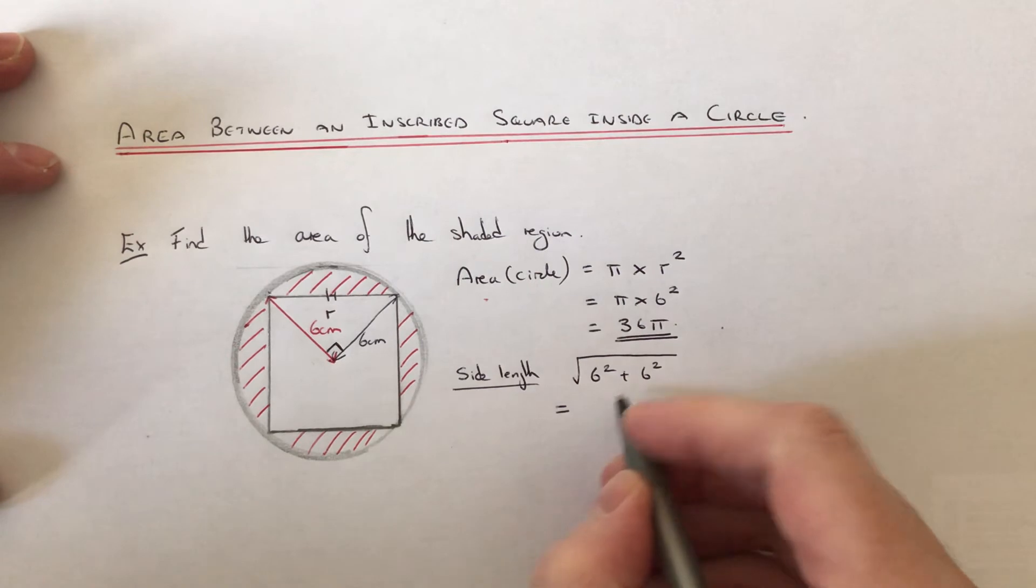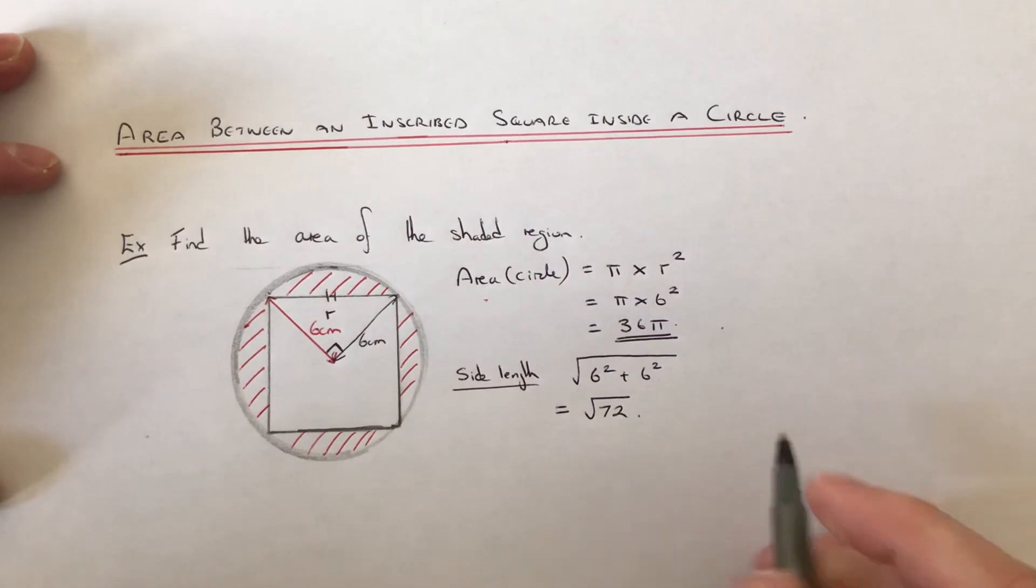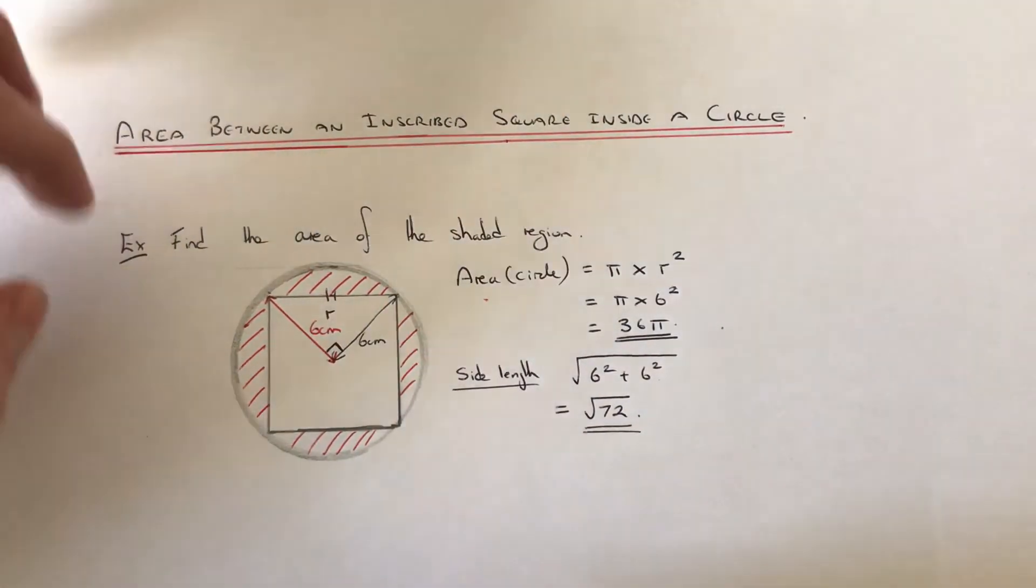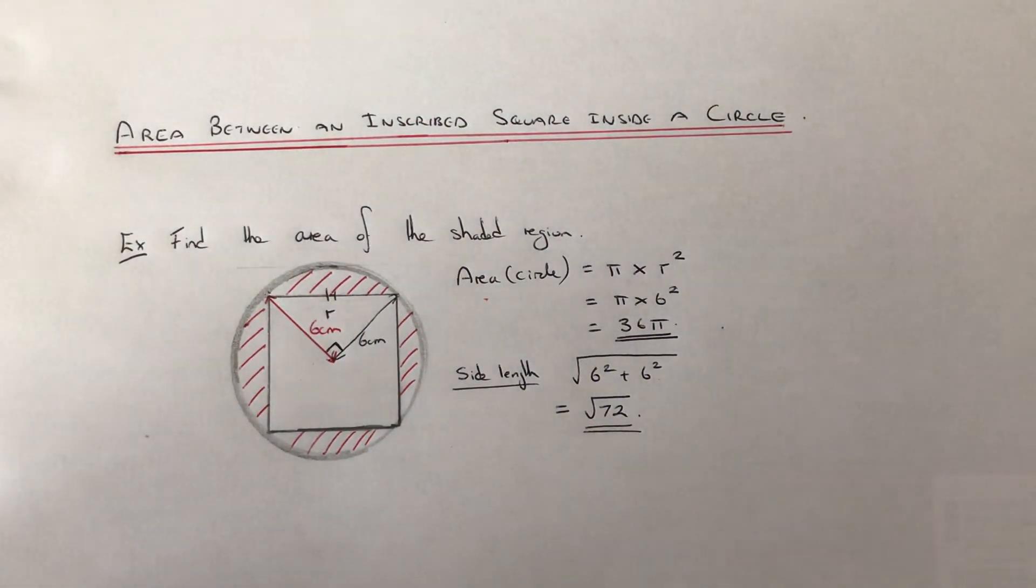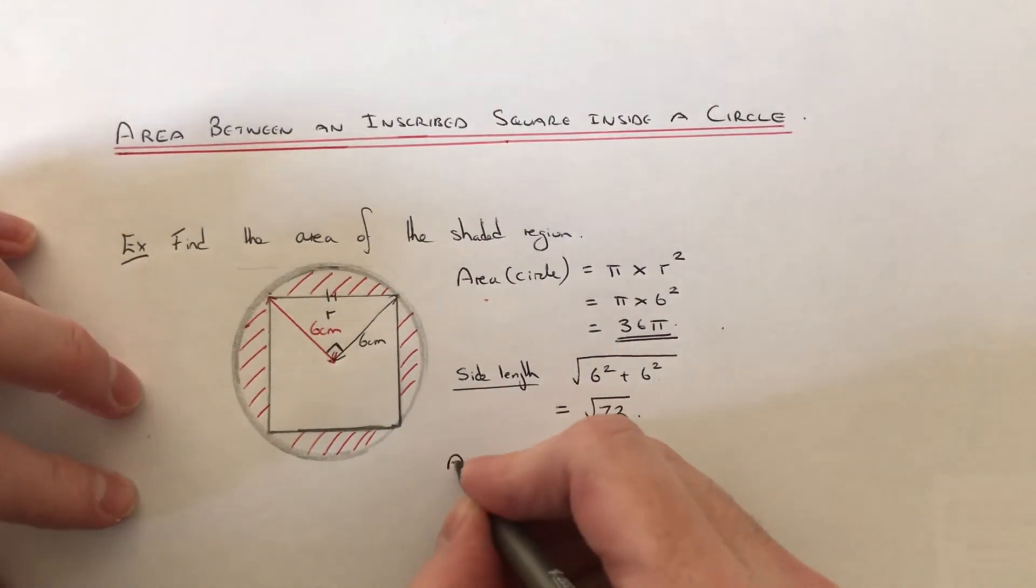Six squared is 36 plus another 36, so we get root 72. So we might as well just leave it as root 72 for the moment and just make it easier to work out the area of the square. So let's do that now.